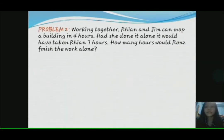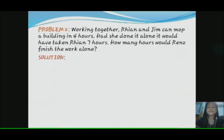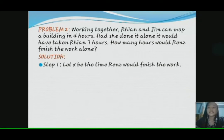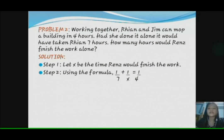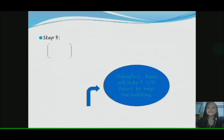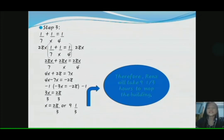Problem number 2: Working together, Rian and Jim can map a building in 4 hours. Had she done it alone, it would have taken Rian 7 hours. How many hours would Jim finish the work alone? Let X be the time Jim would finish the work. Using the same formula, we have 1 over 7 plus 1 over X equals 1 over 4.